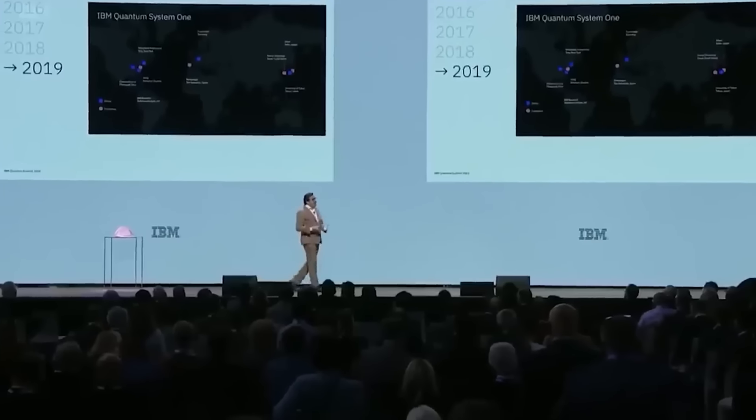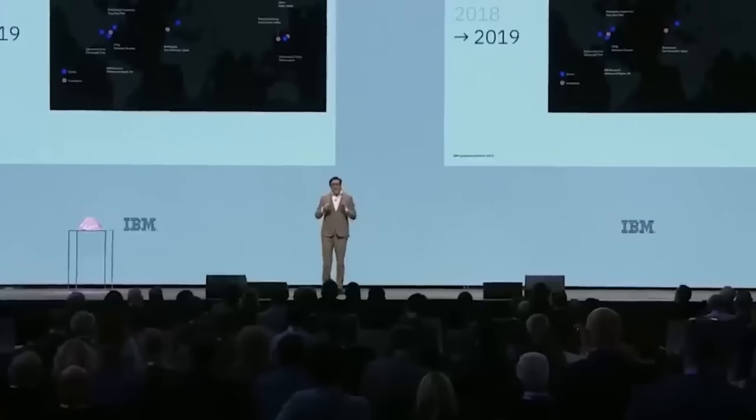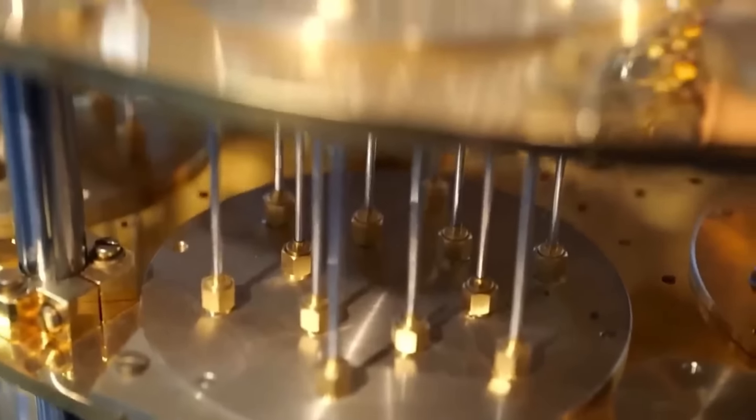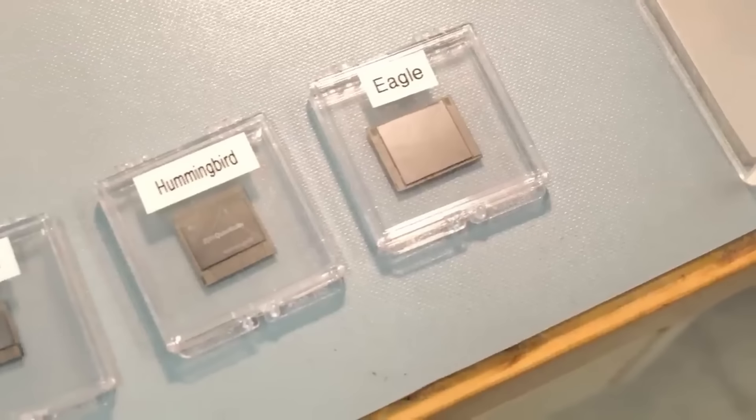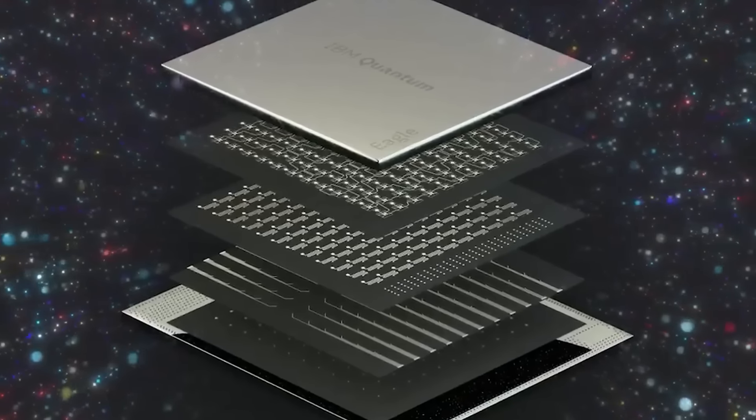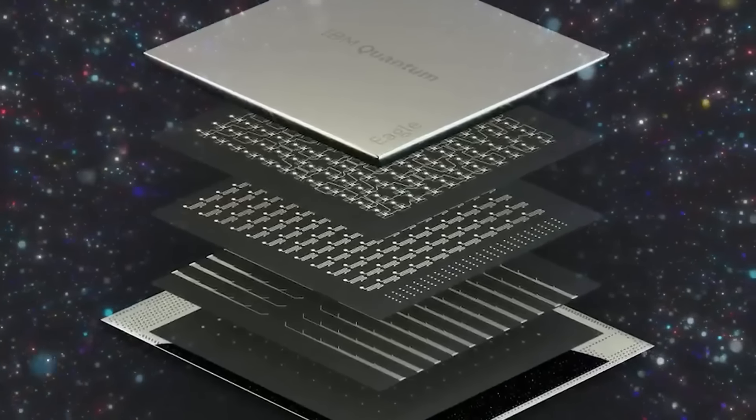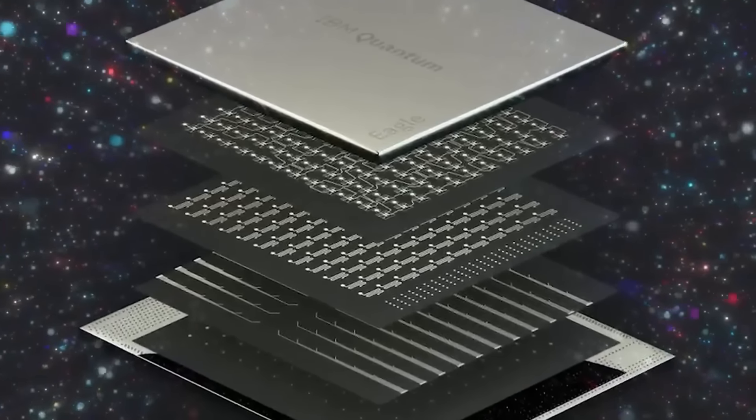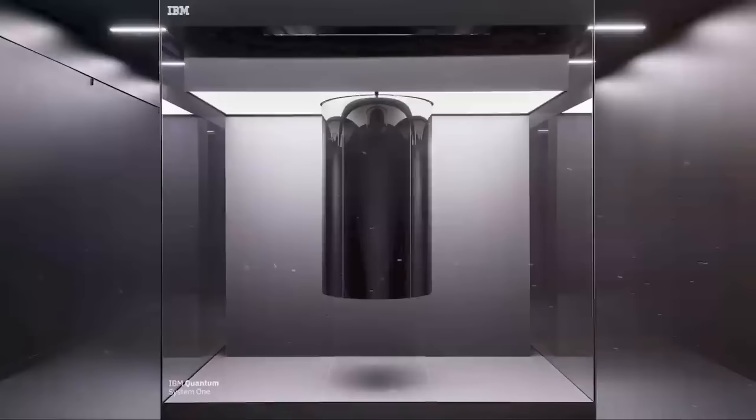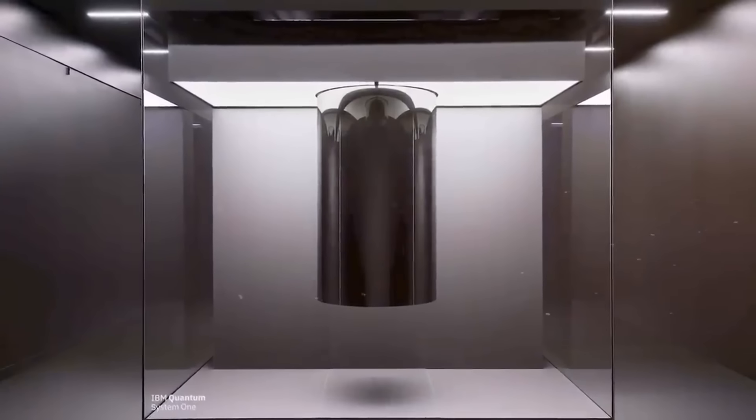But IBM wasn't just focused on theory. They knew they needed to build the actual machines to make this a reality. One of their big breakthroughs was developing these things called superconducting qubits. These are the building blocks of quantum computers, and they're like tiny quantum switches that can be flipped on and off. Keeping these qubits stable and working together is super challenging, but IBM has made huge strides in this area.